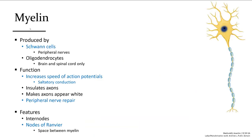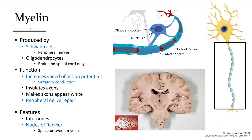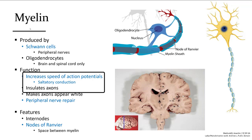Myelin is formed around axons of neurons throughout the body. In the central nervous system — the brain and spinal cord — oligodendrocytes make myelin. One oligodendrocyte can connect two myelin sheaths to up to 60 different nerves. In the peripheral nervous system, the nerves that come out of the body, myelin is made by Schwann cells, with only one Schwann cell for each myelin segment along an axon. Schwann cells play an important role in increasing the speed of electrical impulses — called action potentials — down an axon, and they protect neurons by electrically isolating them from each other.